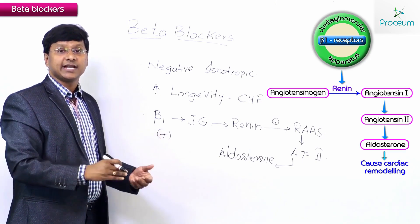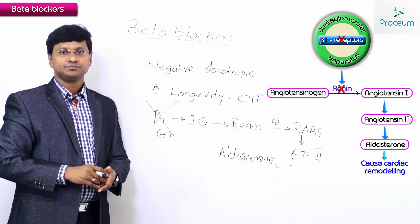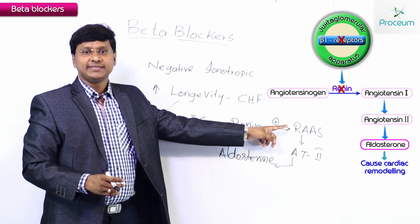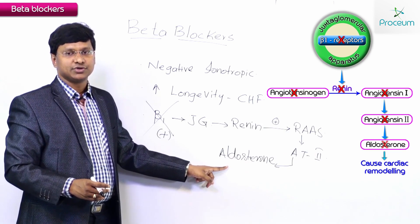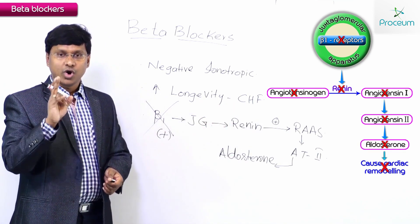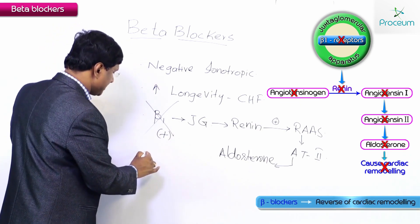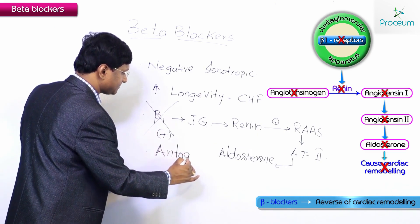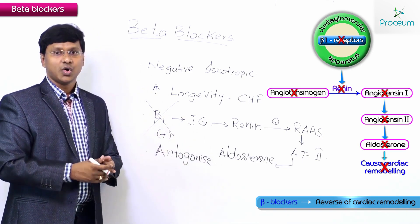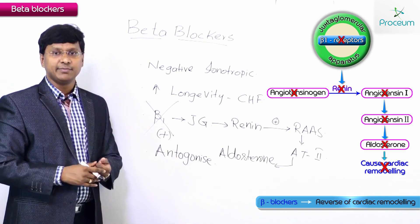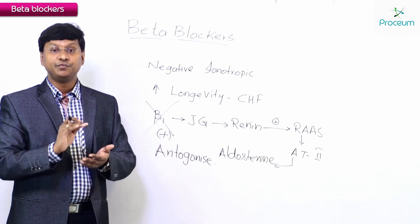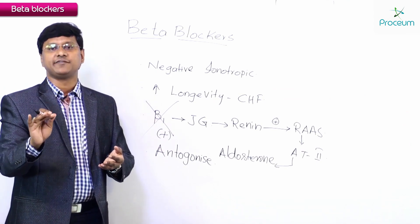So what you try to do is block these beta 1 receptors. If you block the beta 1 receptors, there is no stimulation of the RAS pathway. When there is no stimulation of the RAS pathway, aldosterone is not released. When there is no release of aldosterone, there is no cardiac remodeling. So beta blockers will antagonize remodeling — these are drugs which cause the reversal of remodeling.